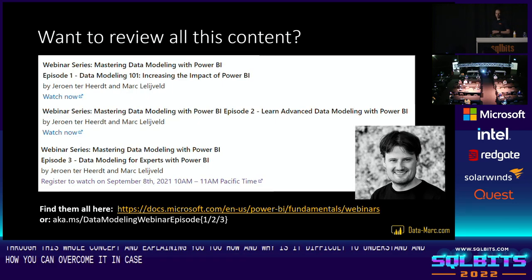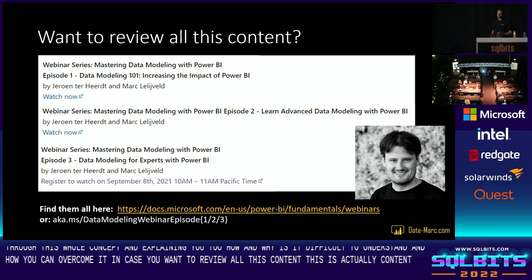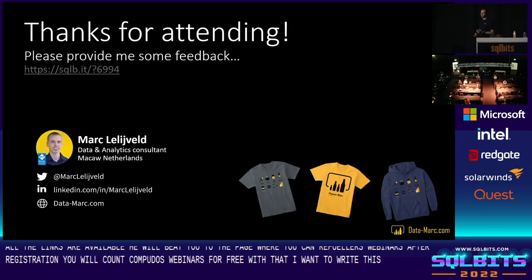There are some resources I want to share — links are on the screen and will be in the shared slides. Particularly, I want to point out the white paper about bi-directional cross-filtering for Power BI Desktop, which goes through the full concept of why it's difficult and how to overcome it. This content is also from a webinar series I recorded with Jeroen Tehert, a program manager on the Power BI team — three episodes on data modeling, this being the second. All links lead to a page where you can review those webinars for free after registration.